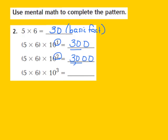Let's try this one more time. I have my 5 times 6, and this time I'm going to multiply it by the third power of 10. My exponent is a 3, so I'm going to write down the product of my basic fact, which was 30, and add three 0s — 1, 2, 3. I'll place my comma, and that turns out to be 30,000. I've now used my basic fact and a pattern to find the product.